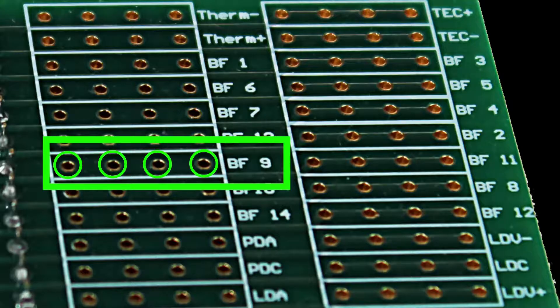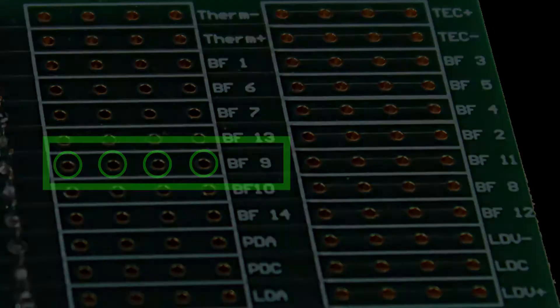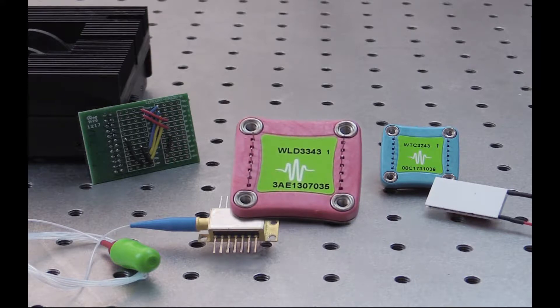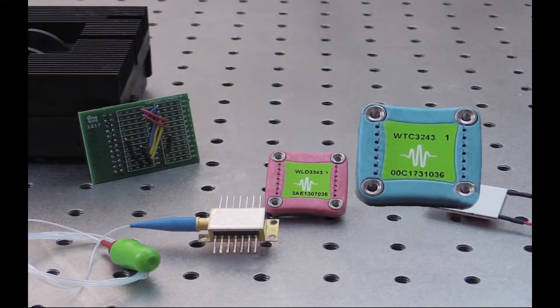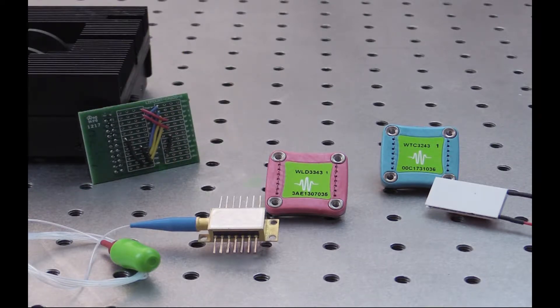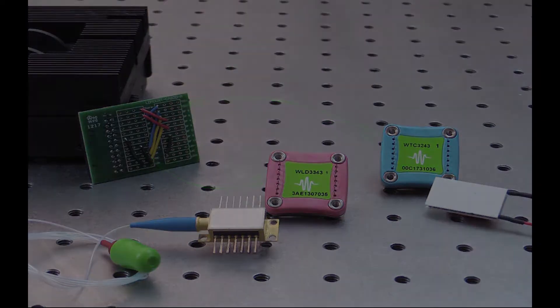To enable custom configurations, the outputs from the laser driver and temperature controller must be connected to the butterfly package through the custom butterfly card. This is achieved by soldering wires from the driver or controller inputs to their corresponding butterfly pin outputs on the card.